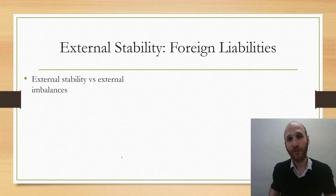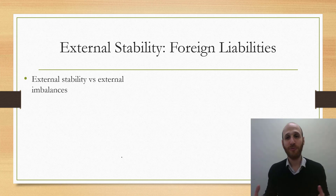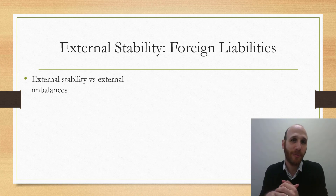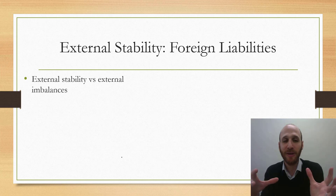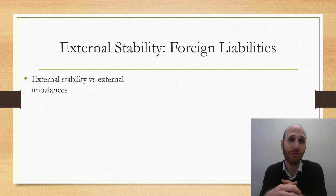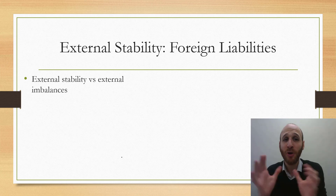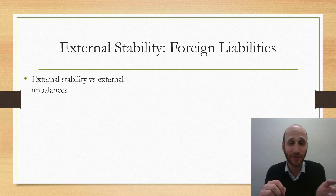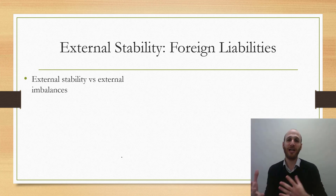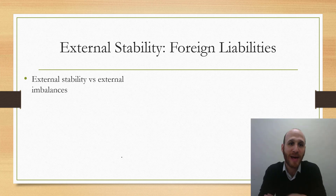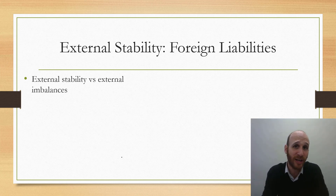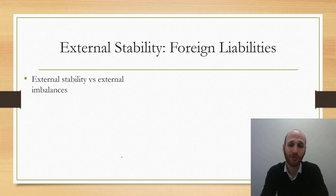External stability involves these three elements: CAD, net foreign liabilities, and the Australian dollar. Countries and economies can have external stability, where they can financially manage their relationships with other nations, or they can have external imbalances, where there are challenges in managing relationships with other nations in terms of foreign debt, balance of payments, and foreign equity.